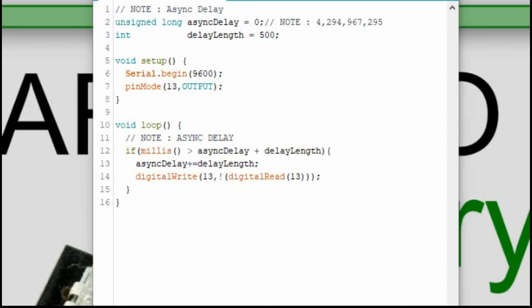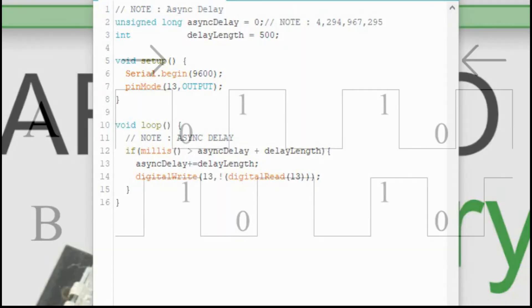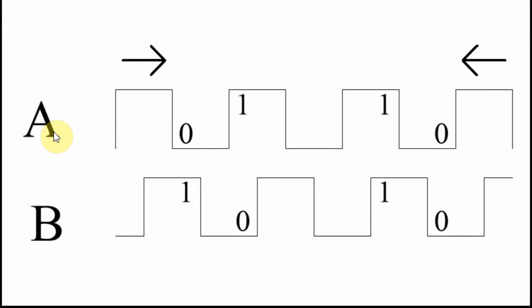I'm going to bring up a diagram of the encoder and how it works. We have two signals that come out of the encoder. There is a switch too, but for the encoding portion — the turning counterclockwise and clockwise — we have two signals: A and B. Sometimes it's labeled CLK for clock, or DT. There are different labelings but for the most part it's A and B. I've labeled this with arrows instead of counterclockwise and clockwise because different encoders operate differently.